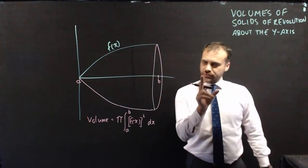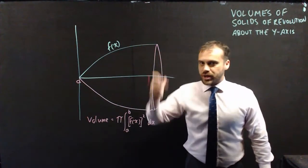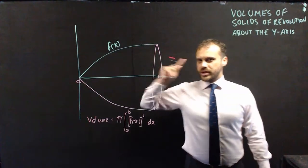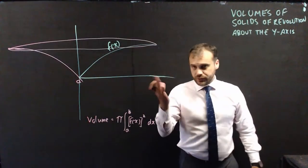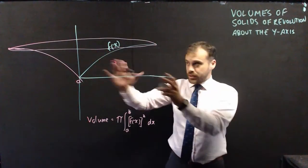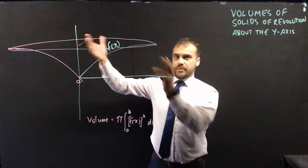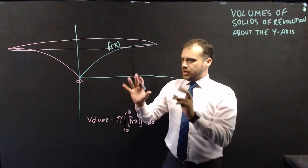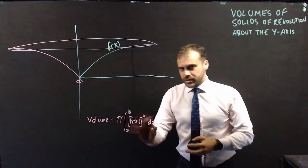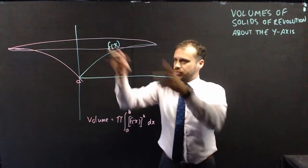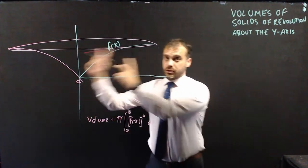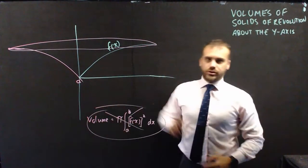But what if our solid of revolution wasn't around the x-axis? What if it was around the y-axis? Well, first of all, you'd get this neat little shape here. This one looks like a bit of a trumpet or cone or something. But this formula is not going to work because that formula is finding that volume of revolution, not this volume of revolution.